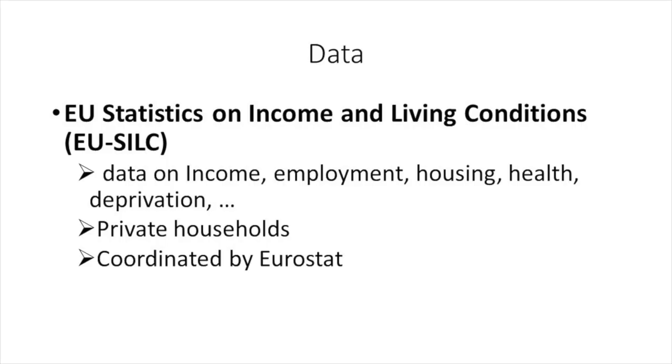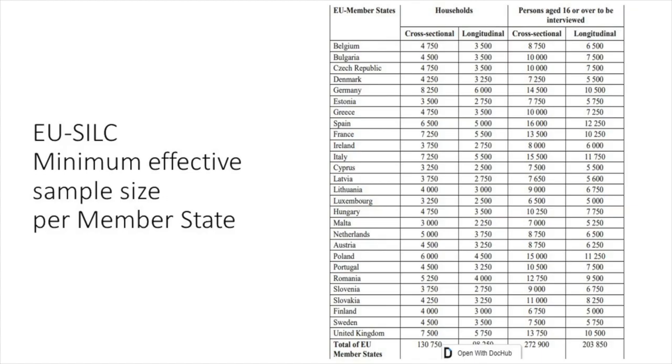To have indicators, data are needed. Back in 2000, together with agreeing on common social objectives, a common data collection was also agreed. This was the EU Statistics on Income and Living Conditions, EU-SILC, which has become the main source of comparable data on income and living conditions in the EU. The EU-SILC is executed by National Statistical Institutes and coordinated by Eurostat, the Statistical Office of the European Union. Sample sizes vary between member states, from about 3,000 to 8,000 households, with a total of about 130,000 households for the whole of the EU. There is a lot of information available on the Eurostat website on the EU-SILC.